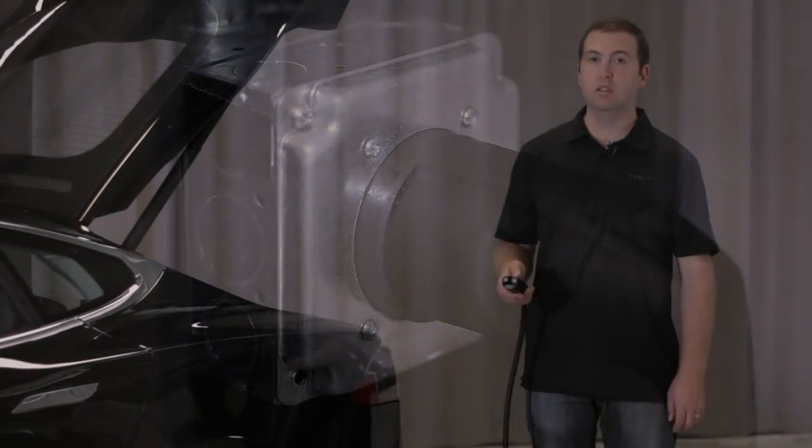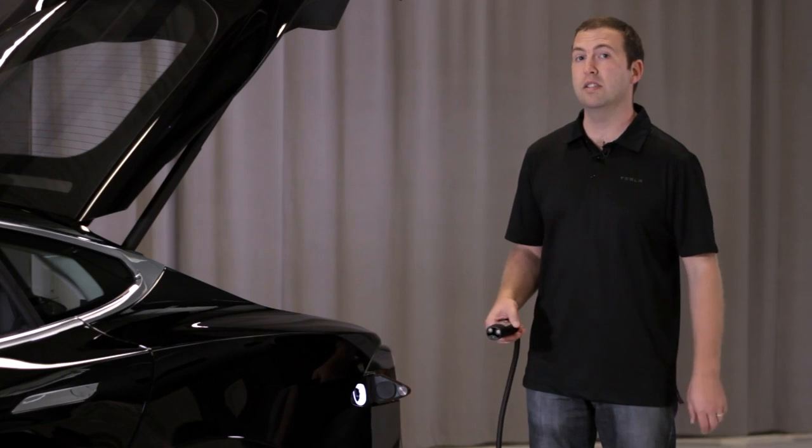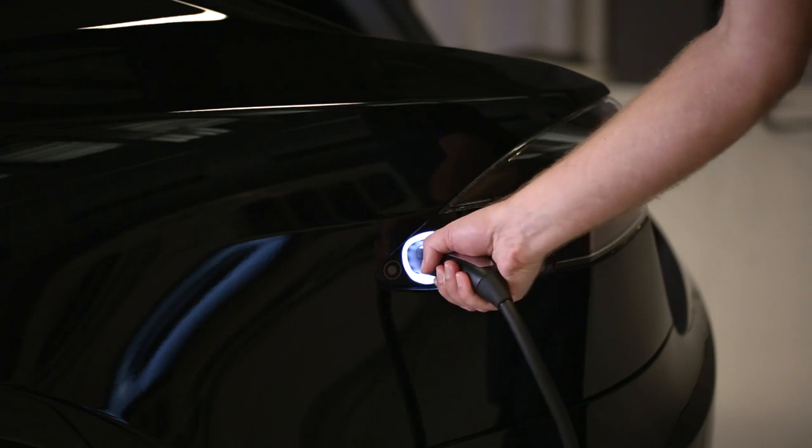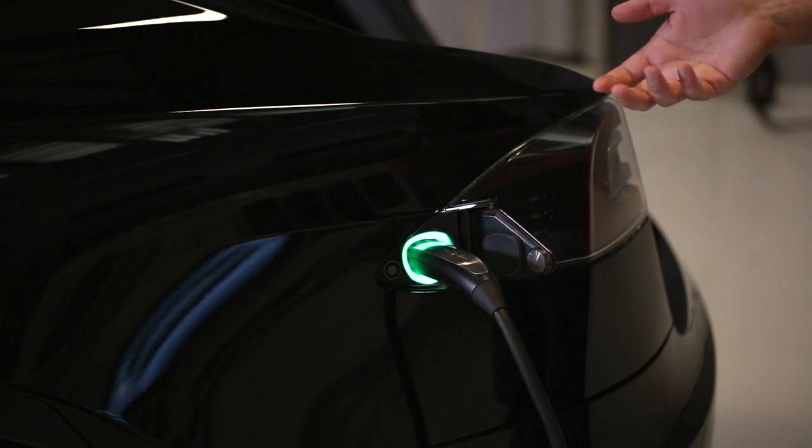Now that we're plugged into the wall, all you need to do is press this button on top here and it'll pop the charge port open. It'll light up white so you can see at night, and then you just plug in. It'll turn blue initially and then it'll turn flashing green as it starts to charge.